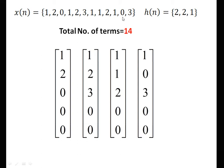The input signal is given and h of n is given. The total number of terms are 14. We take the input in groups of 3 with 2 appended zeros each. First group: 1, 2, 0 — with 2 zeros appended. Next: 1, 2, 3 — with 2 zeros appended. Then: 1, 1, 2 — with 2 zeros appended. And finally: 1, 0, 3 — with 2 zeros appended. Our entire input sequence ends here. So each sub-sequence has 2 zeros added.